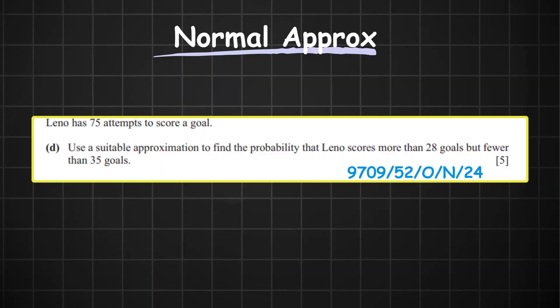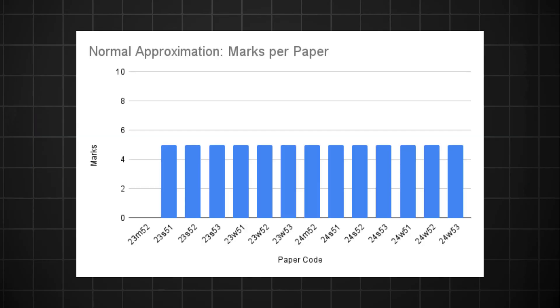The third and final question under the normal distribution is the normal approximation question. It constantly shows up with five marks and has appeared in all of the last 13 papers, so it's definitely coming — be ready for it. At AS level, the only approximation you do is the normal approximation to the binomial distribution. So if a question says 'use a suitable approximation,' it really means use a normal approximation to the binomial distribution. Be cautious and make sure your conditions are satisfied: NP must be greater than 5 and NQ must also be greater than 5.